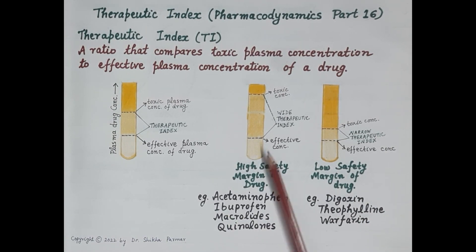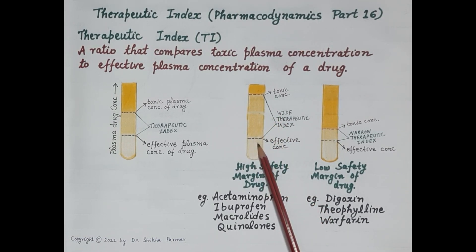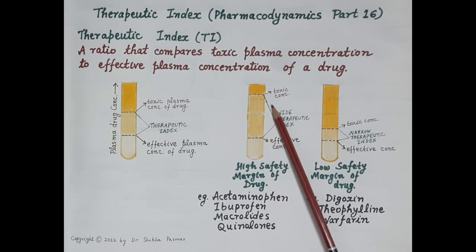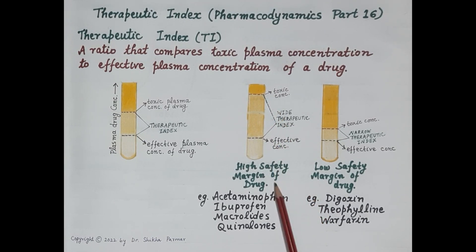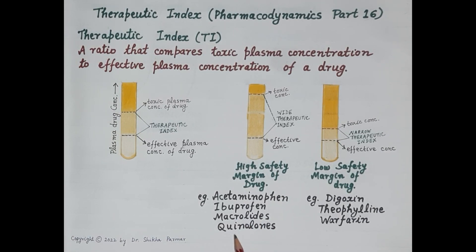Look at this figure — there is a huge difference between the effective concentration that produces therapeutic effect and the concentration that produces toxicity. These drugs are safe and exhibit a high safety margin. Examples include acetaminophen (also called paracetamol), ibuprofen, macrolide antibiotics like azithromycin, and quinolones like ciprofloxacin.